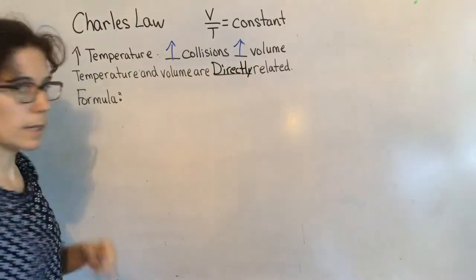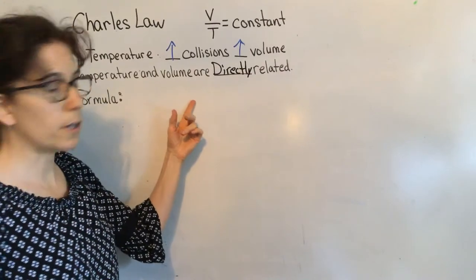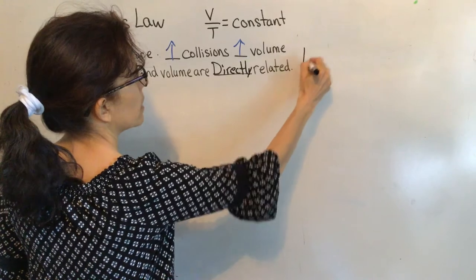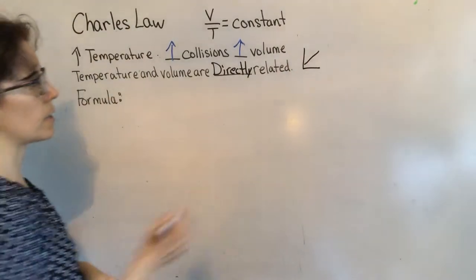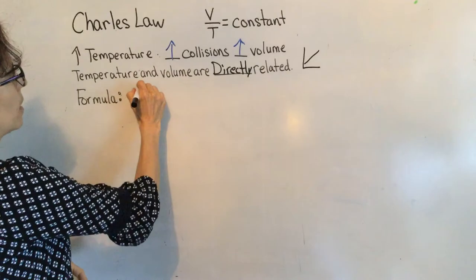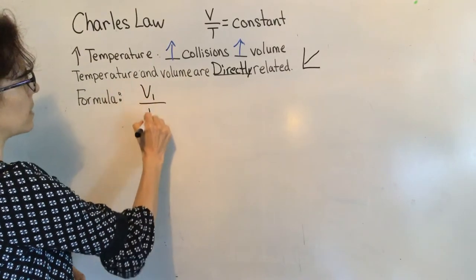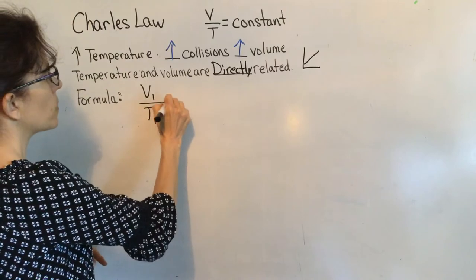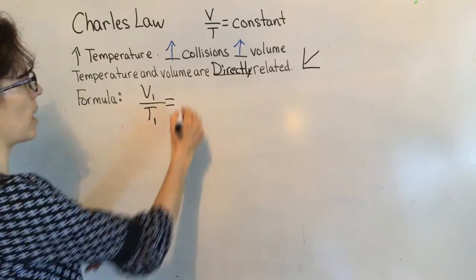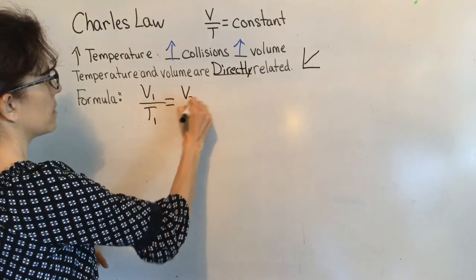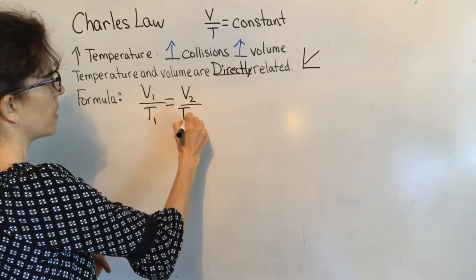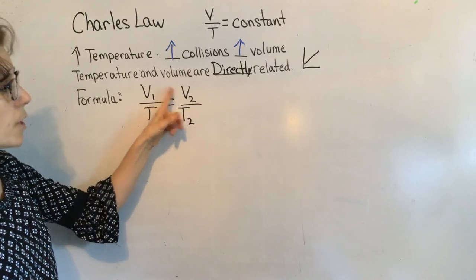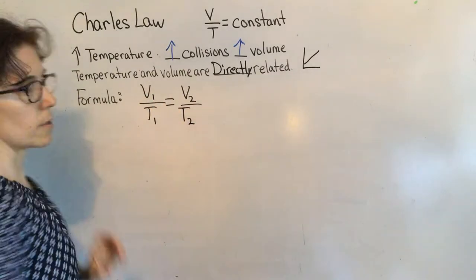You need to sketch a graph on your worksheet. It should look like an increasing linear slope. The formula is: Volume 1 over Temperature 1 equals a constant, and when something changes, we use Volume 1 over Temperature 1 equals Volume 2 over Temperature 2.